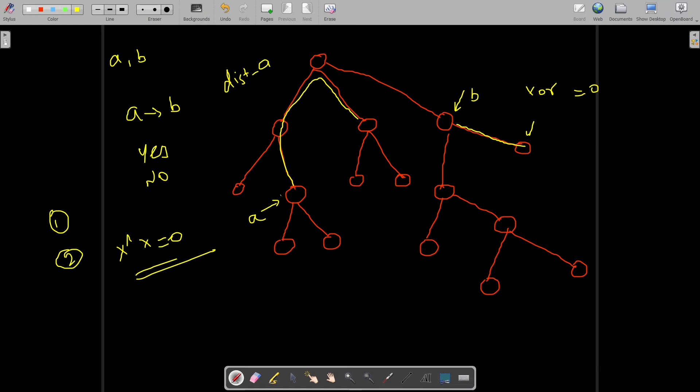Similarly, I will start a DFS from vertex B and store all the XOR between B and all other nodes in a list named distance B.